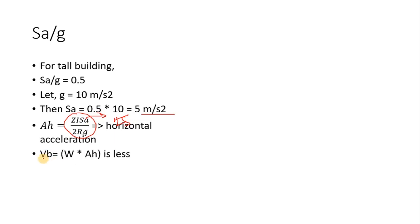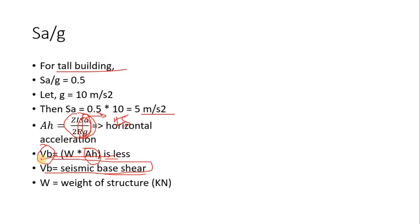The seismic base shear VB = W × Ah. For the tall building, Ah will be less because the time period was more and Sa/g was less, so VB will be less. Here VB is the seismic base shear force and W is the weight of the structure.